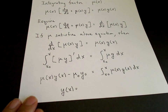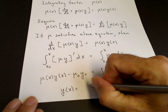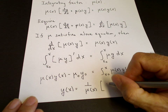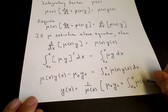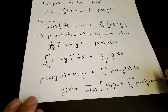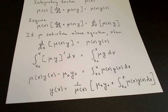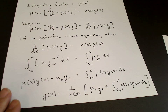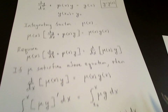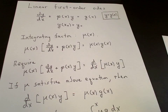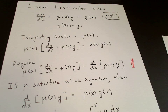So y(x) equals — pulling μ₀·y₀ to the right-hand side and dividing through by μ(x) — 1/μ(x) times [μ₀·y₀ plus the integral from x₀ to x of μ(x)·g(x) dx]. That is our formal solution for y(x). But we haven't determined what the integrating factor μ is yet, so we need to go back to the condition equation to determine μ.